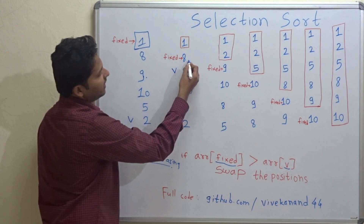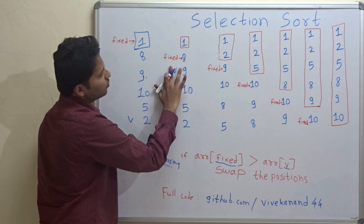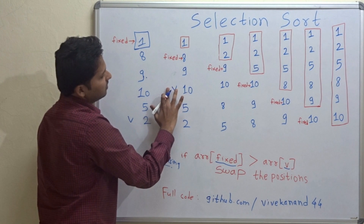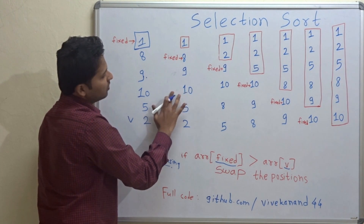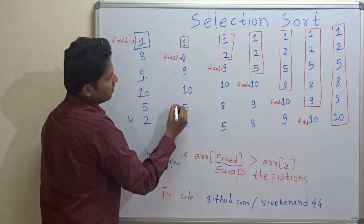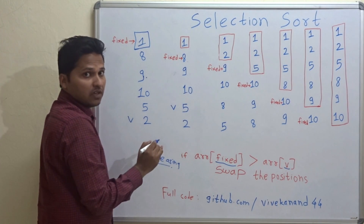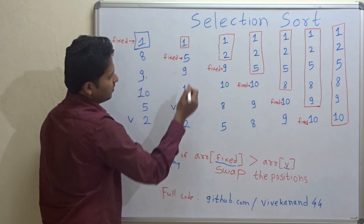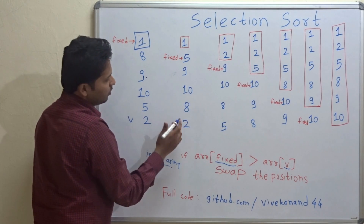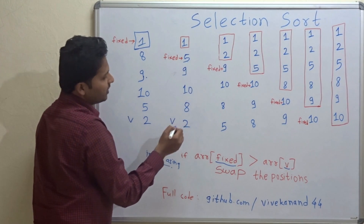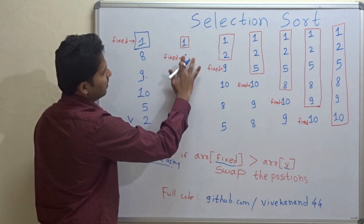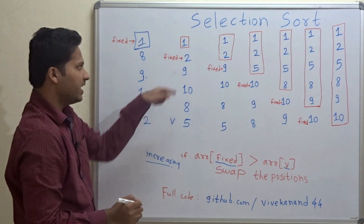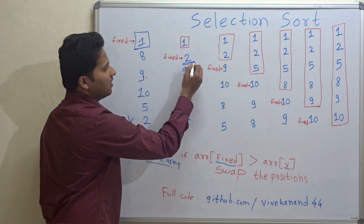In the second pass, 8 is compared with 9 — 8 is less than 9, so no swapping. Variable pointer is incremented; 8 is compared with 10, no swapping. Now 8 is greater than 5, so there should be swapping — 5 comes here and 8 comes here. Variable pointer is increased; 5 is compared with 2, and there should be swapping, so 2 will come here and 5 will come here. In the second pass we got the second smallest element in place.